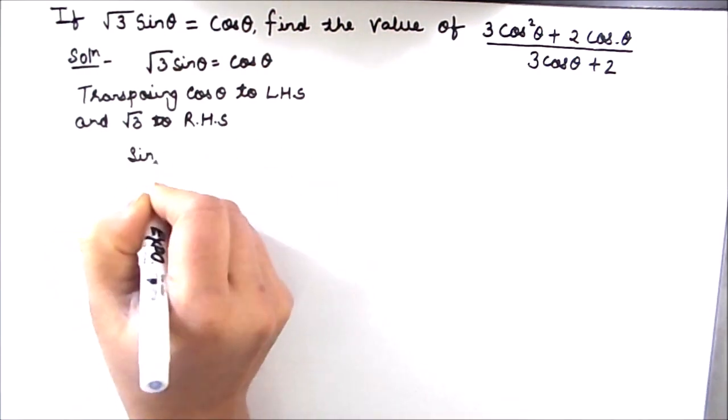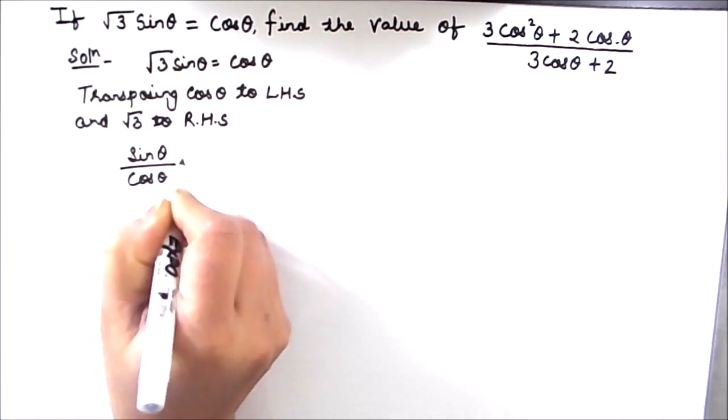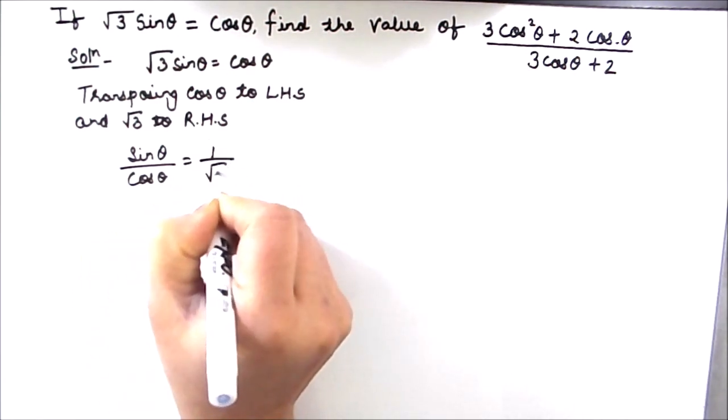So we will get sin theta divided by cos theta is equal to 1 divided by root 3.